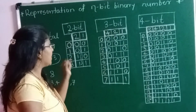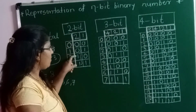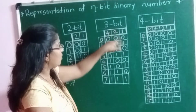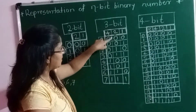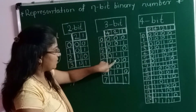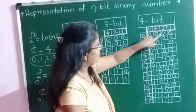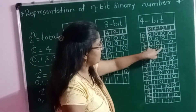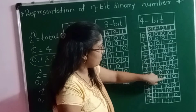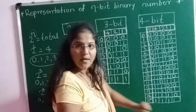Now see the second column from the right side. The pattern is double 0, double 1, repeating: 00, 11, 00, 11. This applies in the 3-bit and 4-bit tables as well — always 2 times 0 followed by 2 times 1.